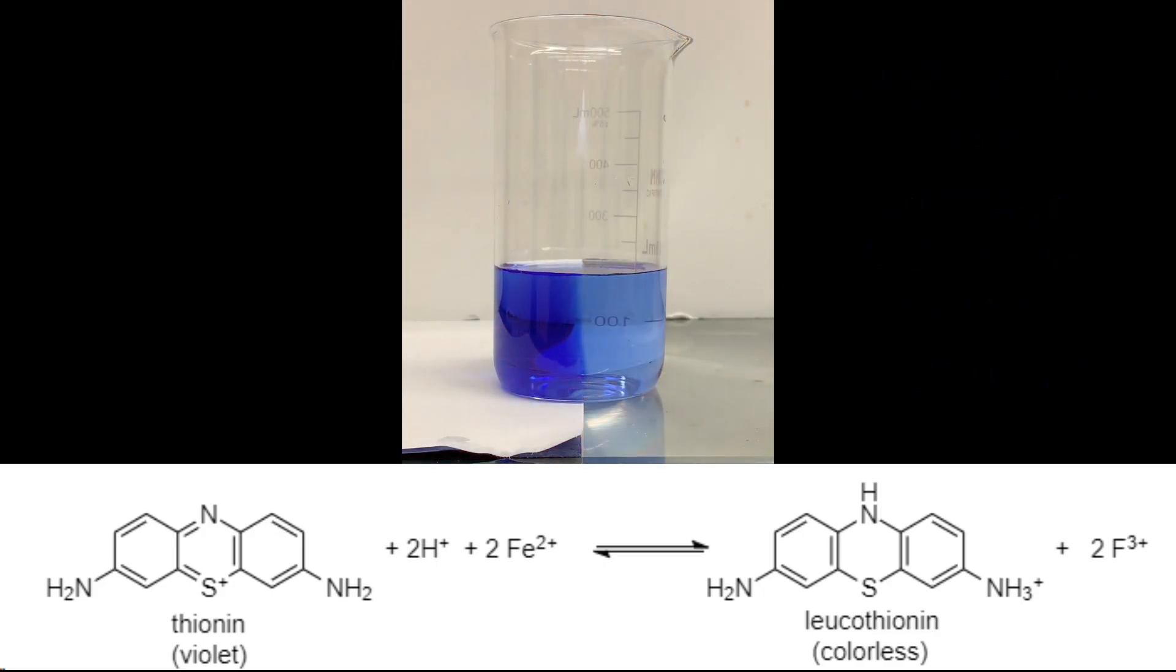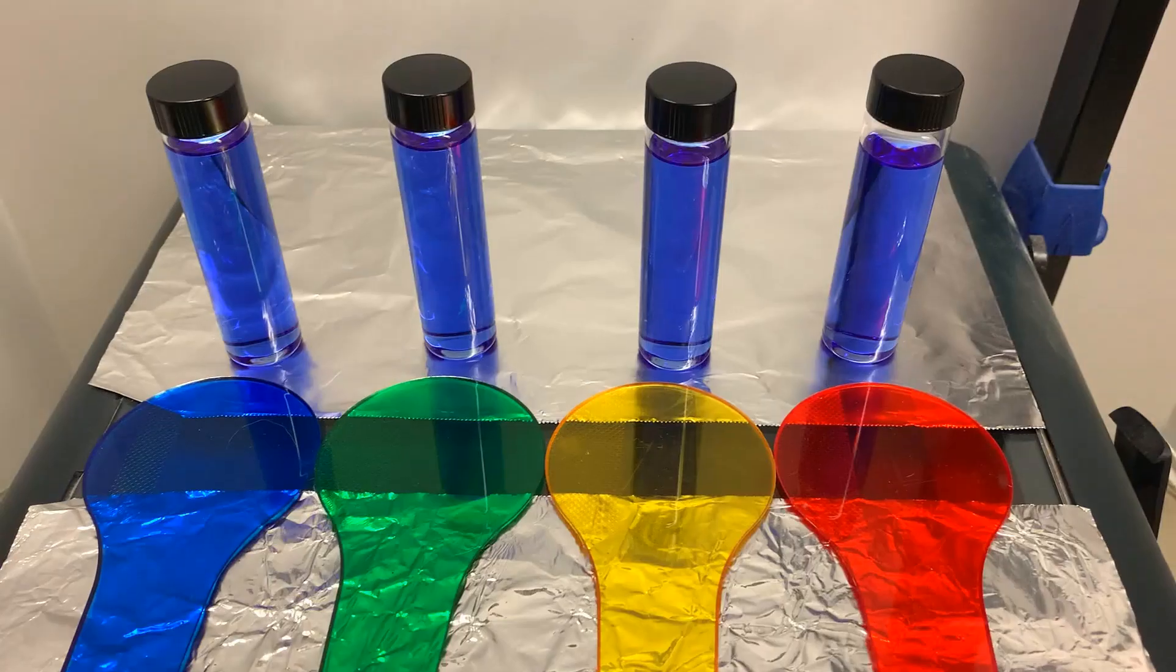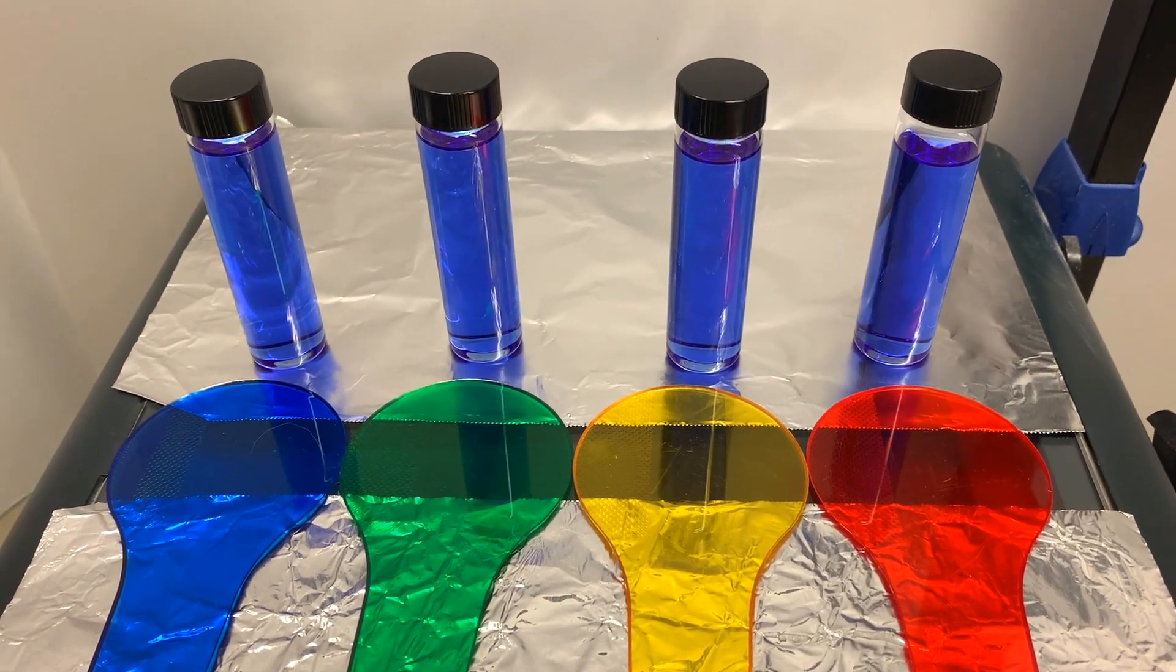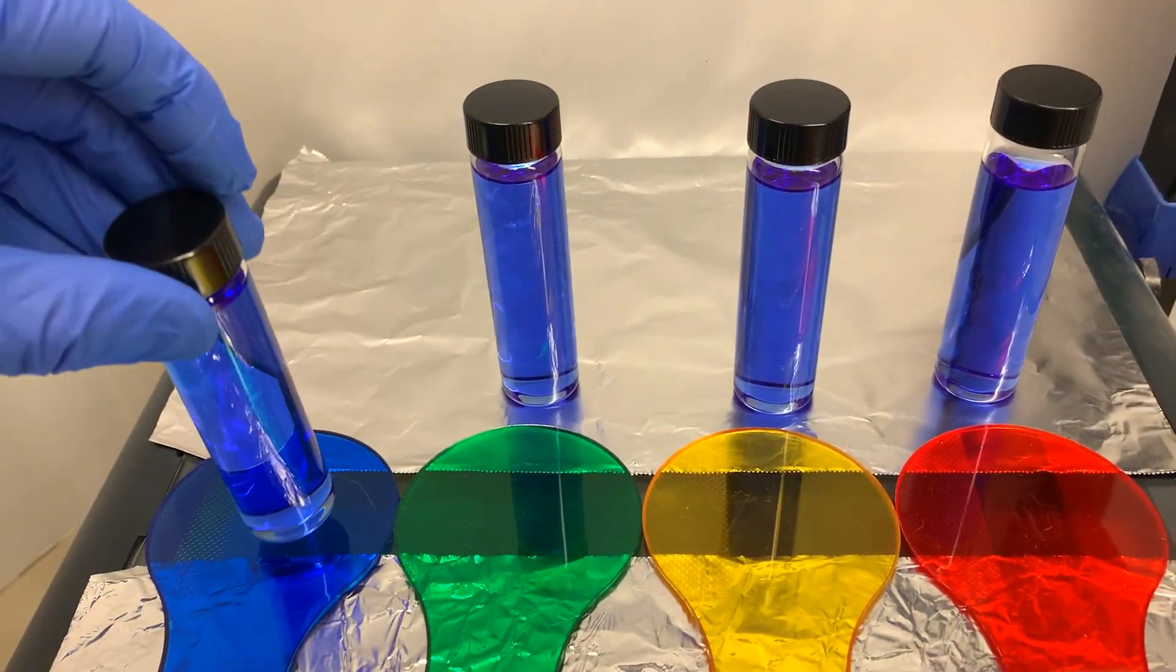When the light is turned off, the reaction proceeds in the reverse direction. Leukothionine reacts with iron 3 ions to form iron 2 ions and the blue colored thionine. I wondered if I could tell what color of light was responsible for causing this chemical reaction.